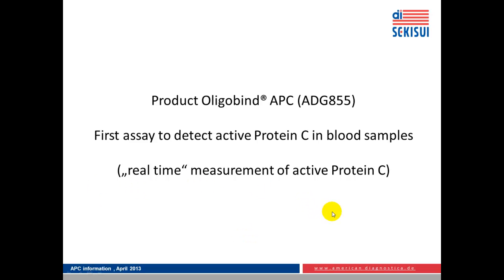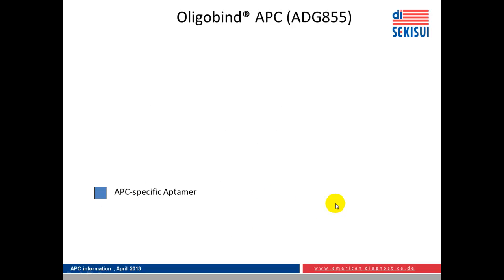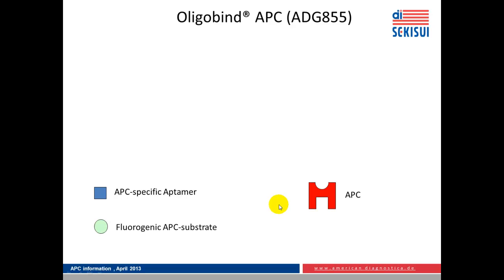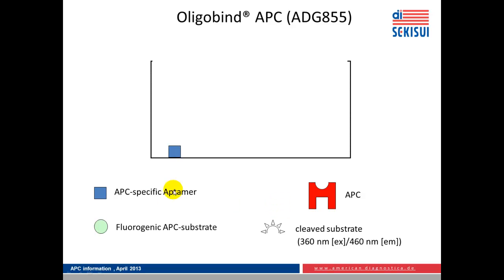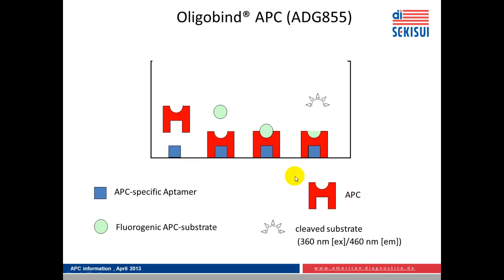It allows real-time measurement of active protein C. Here is a schematic overview on the setup of the assay. It's based on APC-specific aptamers which bind activated protein C in a specific manner. There is a fluorogenic APC substrate that allows quantification of the functional activity and the cleaved substrate. This APC-specific aptamer is bound to a solid phase — a 96-well microtiter format. APC in the sample is captured, then a fluorogenic APC substrate is added and converted to a fluorescent product that is measured in a fluorometer.